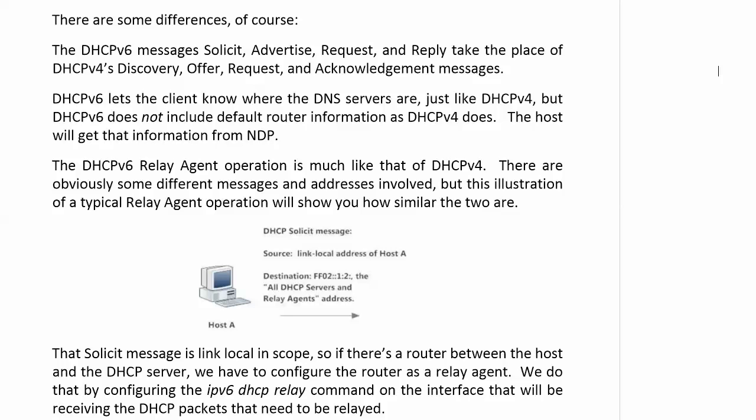Version 6 lets the client know where the DNS servers are, just like version 4's DHCP did. But what DHCP version 6 does not include is default router information. The host gets that via NDP. The host sends out a router solicitation message looking for primarily the link-local address of any routers on the link, but it actually gets a little more information back — and some of that extra information is the default router info. So with version 6, we still get DNS server information from DHCP, but default router information comes from NDP, the Neighbor Discovery Protocol.